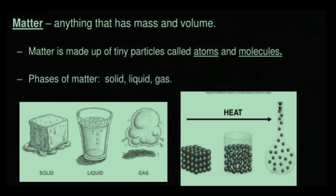Matter is made up of tiny particles called atoms and molecules. Now, what is an atom and what is a molecule? I will tell you that also. The phases of matter, or the three states of matter, are solid, liquid and gas.